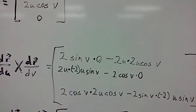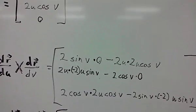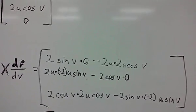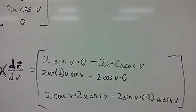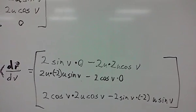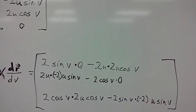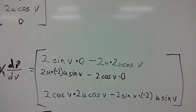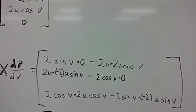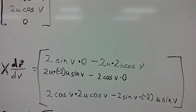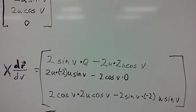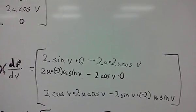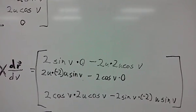You'll get 2 sine v times 0, negative 2u times 2 times u times cosine v for your first component. You'll get 2u times negative 2 times u sine v minus 2 cosine v times 0. And then on the bottom is the most sophisticated one, 2 cosine v times 2u times cosine v minus 2 sine v times negative 2 times u times sine v. The bottom one is also the one that has a lot cancel out because you've got a cosine square on the left and you have a sine square on the right. And you can actually reduce those down to 1. So it would be basically the 4 times u times cosine squared plus 4 times u sine squared. So it would be 4u times cosine squared plus sine squared, which is 1. So it would just be 4u on the bottom.